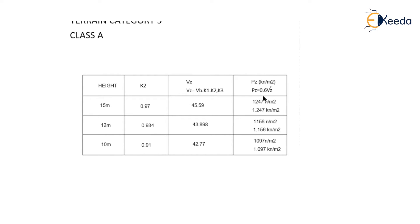Design wind pressure PZ = 0.6 × VZ² = 0.6 × (45.59)² = 1247 N/m². In kilonewtons per meter square that is 1.247 kN/m². For 12-meter height, K2 is interpolated between 10 and 15 meters using linear interpolation, giving approximately K2 = 0.934. VZ = 43.898 m/s, and PZ = 0.6 × (43.898)² = 1156 N/m² = 1.156 kN/m².